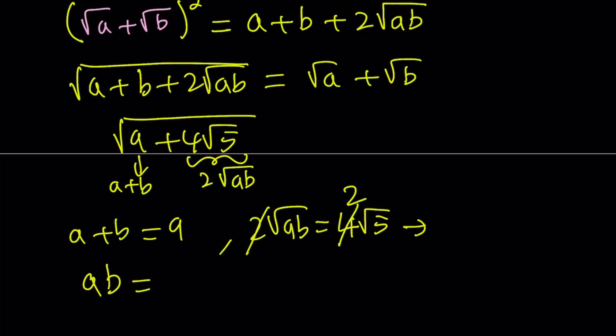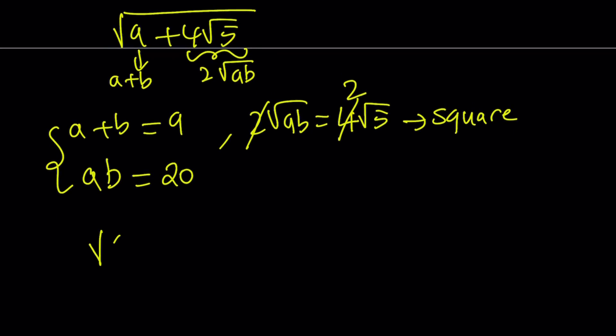We squared both sides, and we get a system of equations. This system is very easy to solve because it has integer solutions, and you can easily guess that A is 5, B is 4, or vice versa. But since we don't really care about which one is which, or we can always assume that A is larger, in this case, A would be 5. That means we can write the square root of 9 plus 4 root 5 as square root of 5 plus square root of 4.